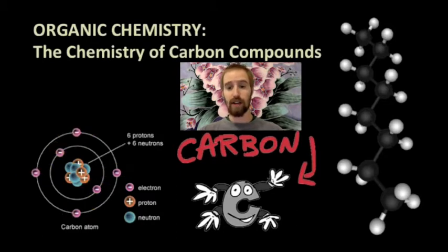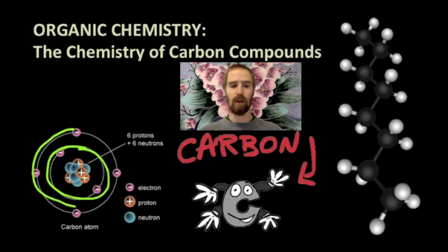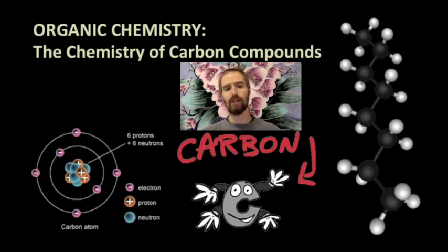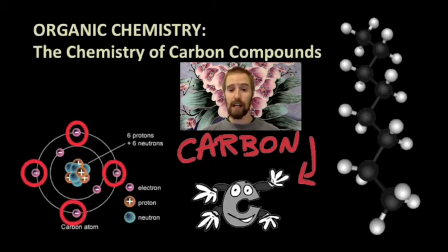Two of these electrons are found in the first energy level, as we can see in this picture, and the remaining four electrons are found in the second energy level. Sounds pretty boring so far, but it is these four electrons in the second energy level that make carbon atoms the basis for all life as we know it.